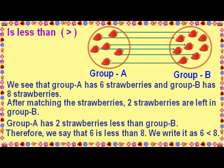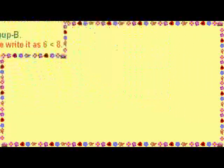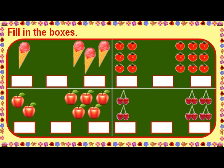Is less than. We see that Group A has 6 strawberries and Group B has 8 strawberries. After matching the strawberries, two strawberries are left in Group B. Group A has two strawberries less than Group B. Therefore we say 6 is less than 8. We write it as 6 < 8. Fill in the boxes. 1 ice cream cone is less than 3 ice cream cones. 6 tomatoes are less than 9 tomatoes. 2 apples are less than 5 apples. 4 cherries are less than 8 cherries.